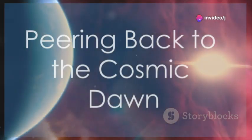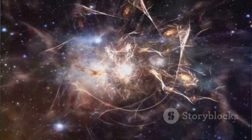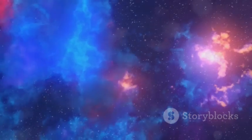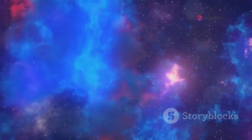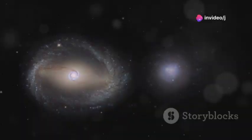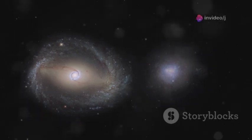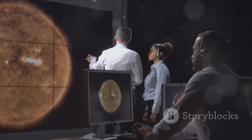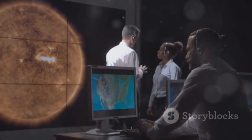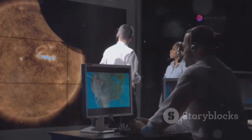One of Webb's main missions: uncover how the first galaxies formed. Before Webb, we expected to find small chaotic proto-galaxies in the early universe. Instead, Webb revealed massive mature galaxies far earlier than our theories predicted. It's like finding a full-grown tree where you expected a sapling. This discovery is forcing scientists to rethink how galaxies and stars formed. Maybe everything happened faster than we thought.